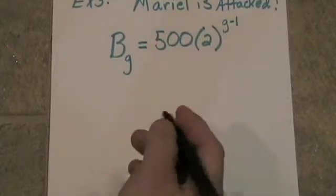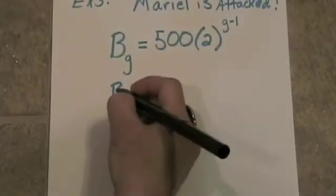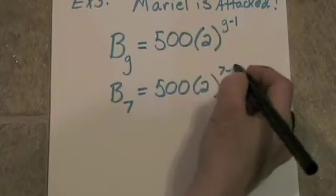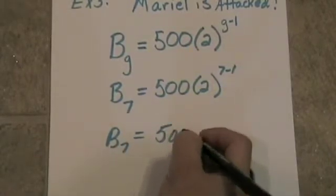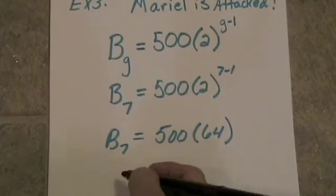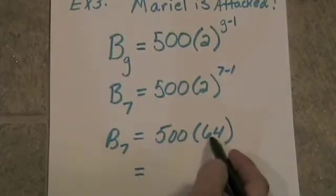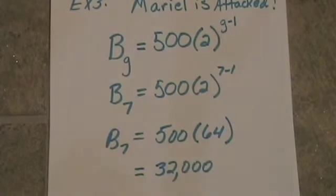So the question is: how many bacteria will there be in the seventh generation? B sub 7 would be equal to 500 times 2 to the 7 minus 1, which is 6. So after the seventh generation, she's going to have 500 times 64, which is 32,000 bacteria in Muriel's nasal cavity.